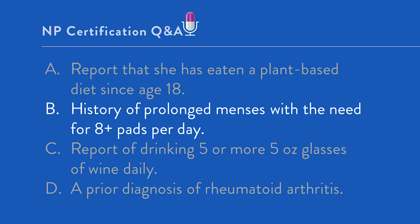For option D, a prior diagnosis of rheumatoid arthritis poses a risk for anemia of chronic disease. However, anemia of chronic disease presents with a normocytic, normochromic anemia with a normal-range RDW. We would also expect to be given more data about uncontrolled rheumatoid arthritis in such a case. The key takeaway when assessing a person with anemia: keep in mind the most common risk factors for each type of anemia, coupled with the clinical presentation.